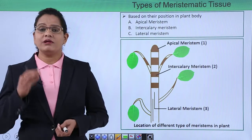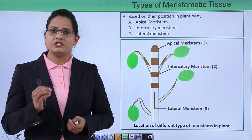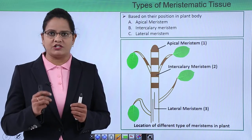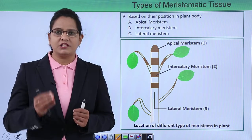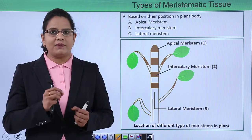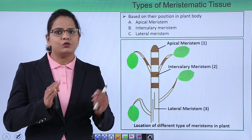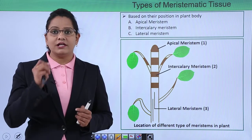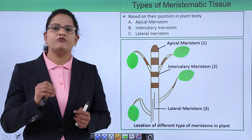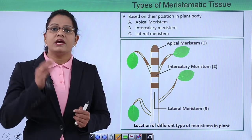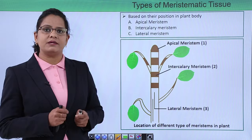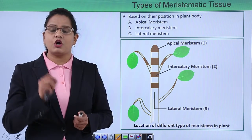Before we move on to the intercalary and lateral meristem, let us have a quick recap of plant tissues. Plants need to grow and perform different types of functions, so they have tissues. Plant tissues are of two types: meristematic tissue and permanent tissue. Meristematic cells are continuously dividing cells which get differentiated later to form permanent tissues. On the basis of their location, meristematic tissues are of three types: apical meristem, intercalary meristem, and lateral meristem.